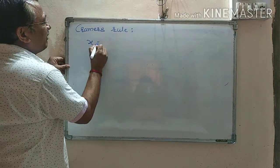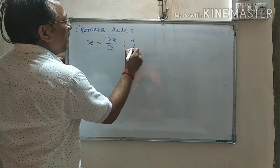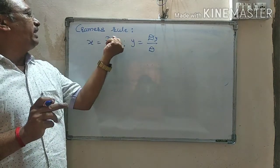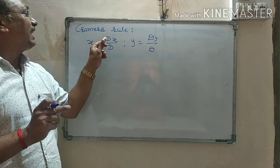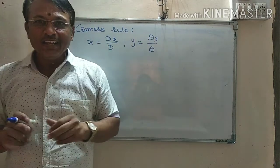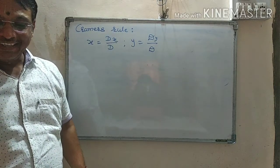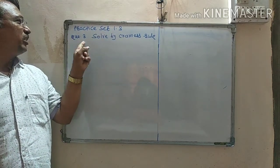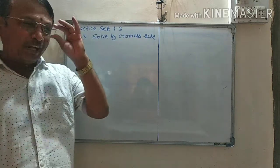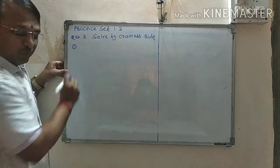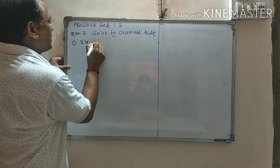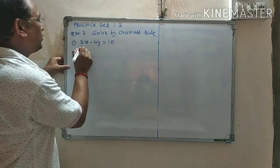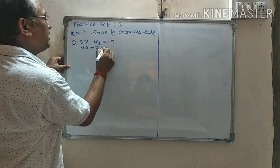Cramer's Rule: x is equal to dx upon d and y is equal to dy upon d. By Cramer's Rule, 3x minus 4y is equal to 10, and second equation 4x plus 3y is equal to 5.